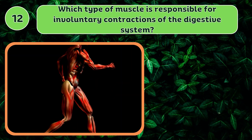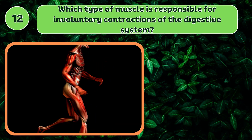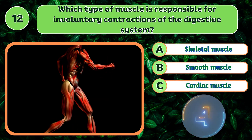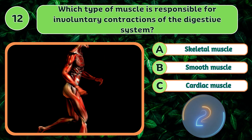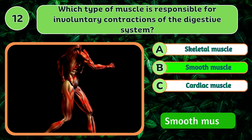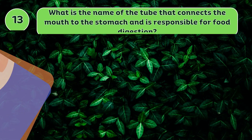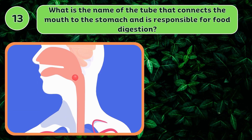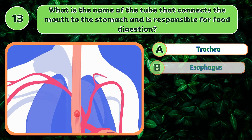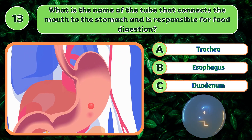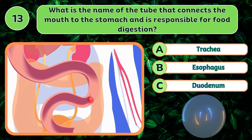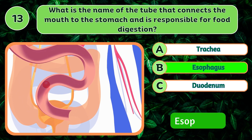Which type of muscle is responsible for involuntary contractions of the digestive system? Smooth muscle. What is the name of the tube that connects the mouth to the stomach? Esophagus.